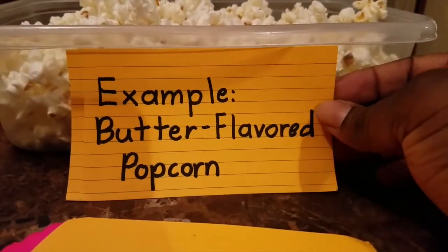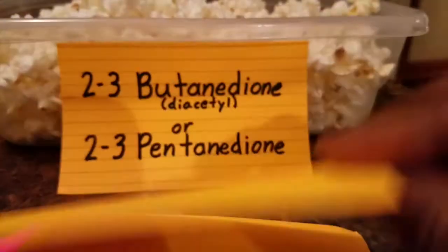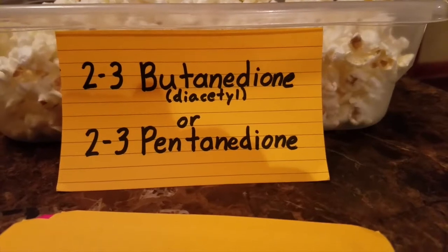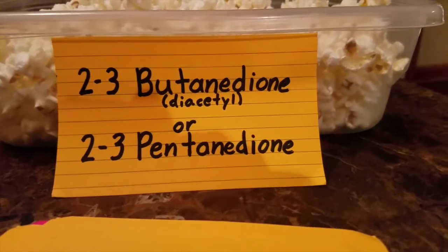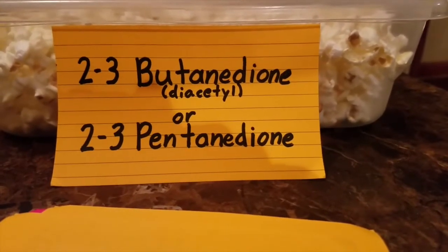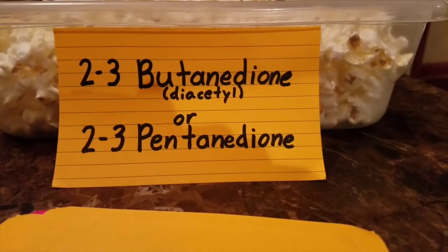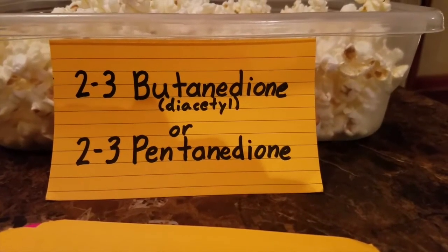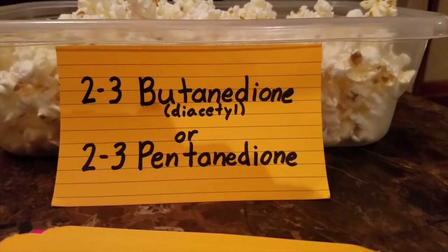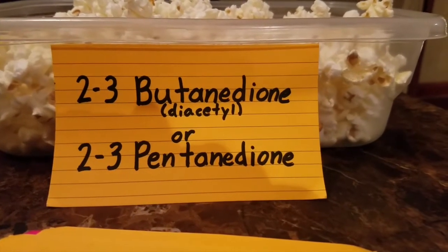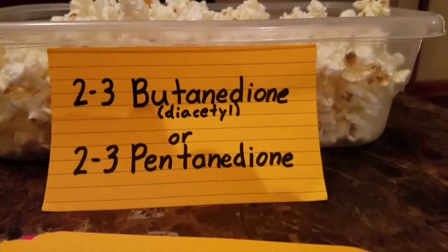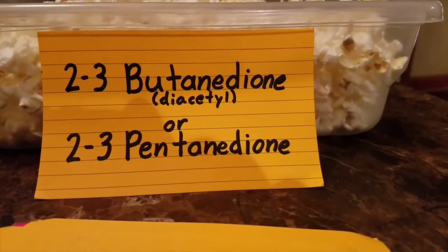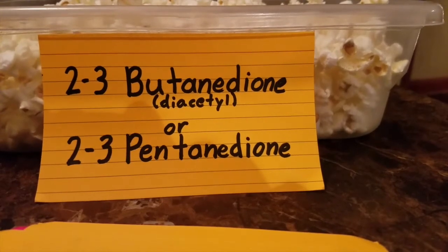For butter-flavored popcorn, it could add two to three butanedione or diacetyl compounds, or two to three pentanedione compounds. It really all depends on the type of butter and how much is used — it really all depends in the end on any flavoring, how much is in it, or what different seasonings have been added.